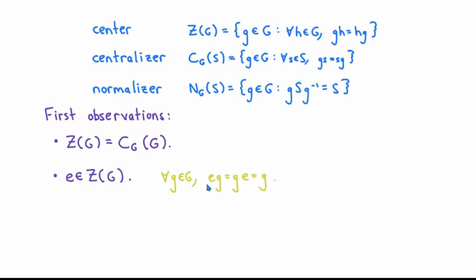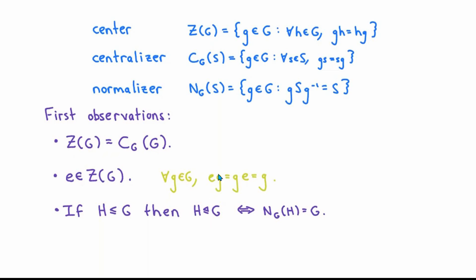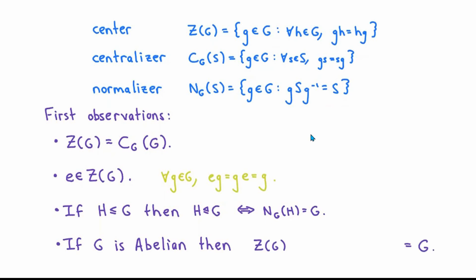Next, it's also easy to see that since the identity element in any group commutes with every other element, the identity element is always an element of the center of any group. And if you have any group G and any subgroup H of G, then to say that H is a normal subgroup of G is exactly the same as saying that the normalizer of H in G is equal to all of G. That follows directly from the definition of normal subgroup, together with the equivalent conditions for normality proved in the previous video. And finally, if G is an abelian group, then everything commutes with everything else, so trivially the center of G is all of G, which forces C sub G of S and N sub G of S to equal G for every subset S of G. So in the abelian case, there's nothing interesting going on with these definitions.